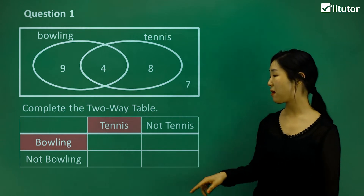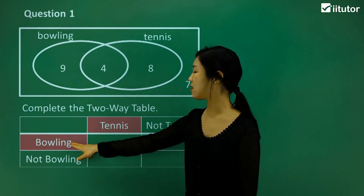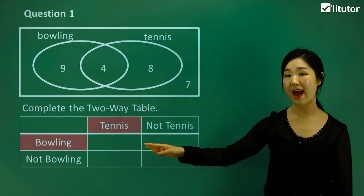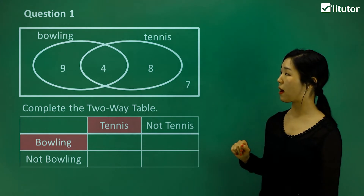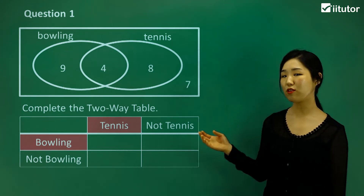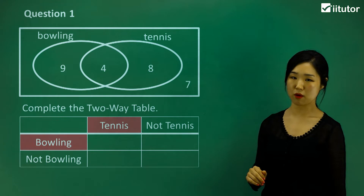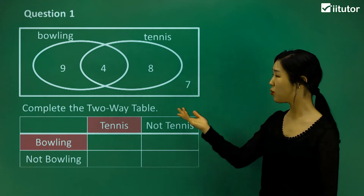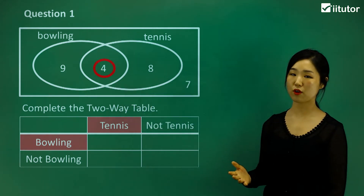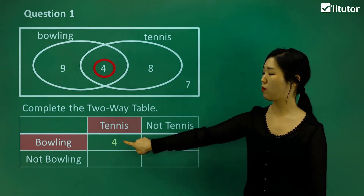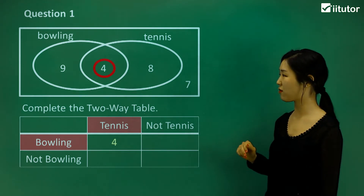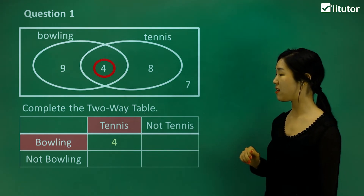First, I'm going to start by filling in the tennis and bowling box — those who do both tennis and bowling. If you look at the Venn diagram, the overlapping part represents those that do both. So four will be filled into that box. It's very clearly straightforward from the Venn diagram.